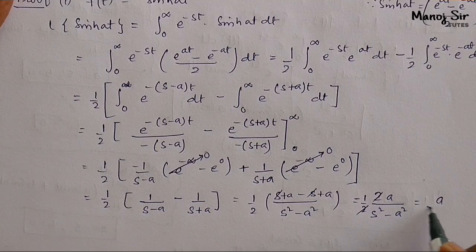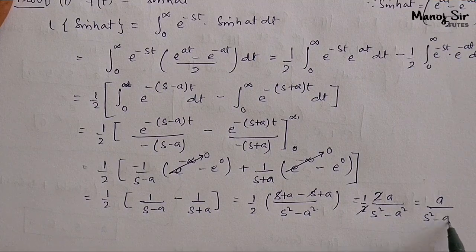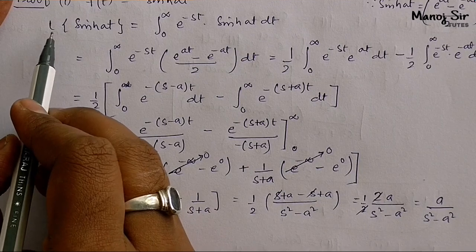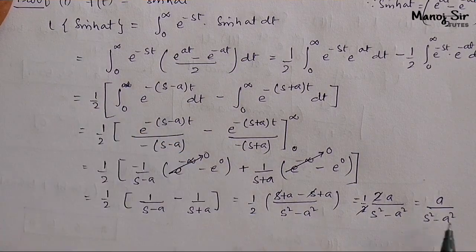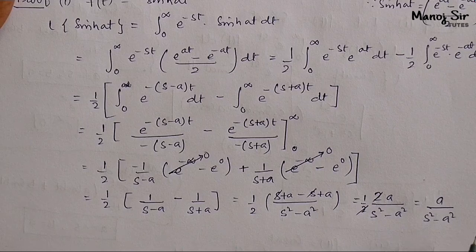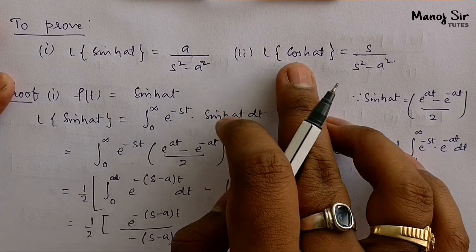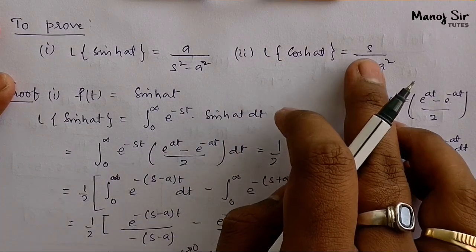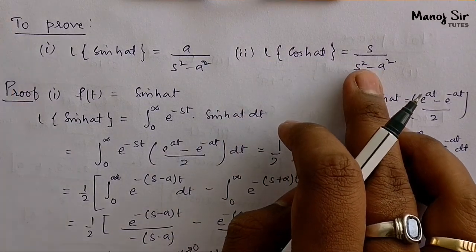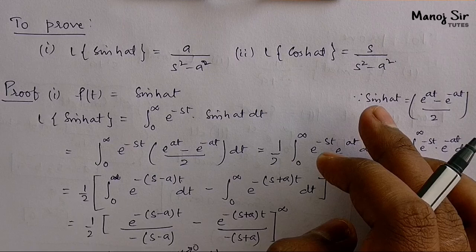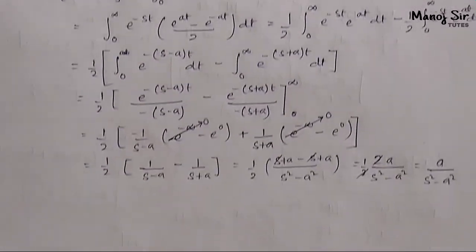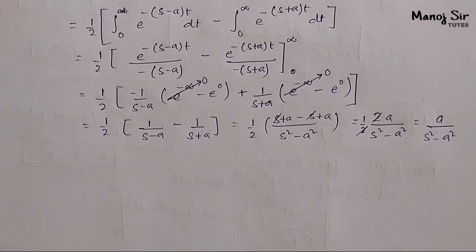Hence proved: Laplace of sine hyperbolic at equals a upon s squared minus a squared. The first part is over. Now let us prove the second part, that is Laplace of cosine hyperbolic at equals s upon s squared minus a squared. Let us start solving the second part.